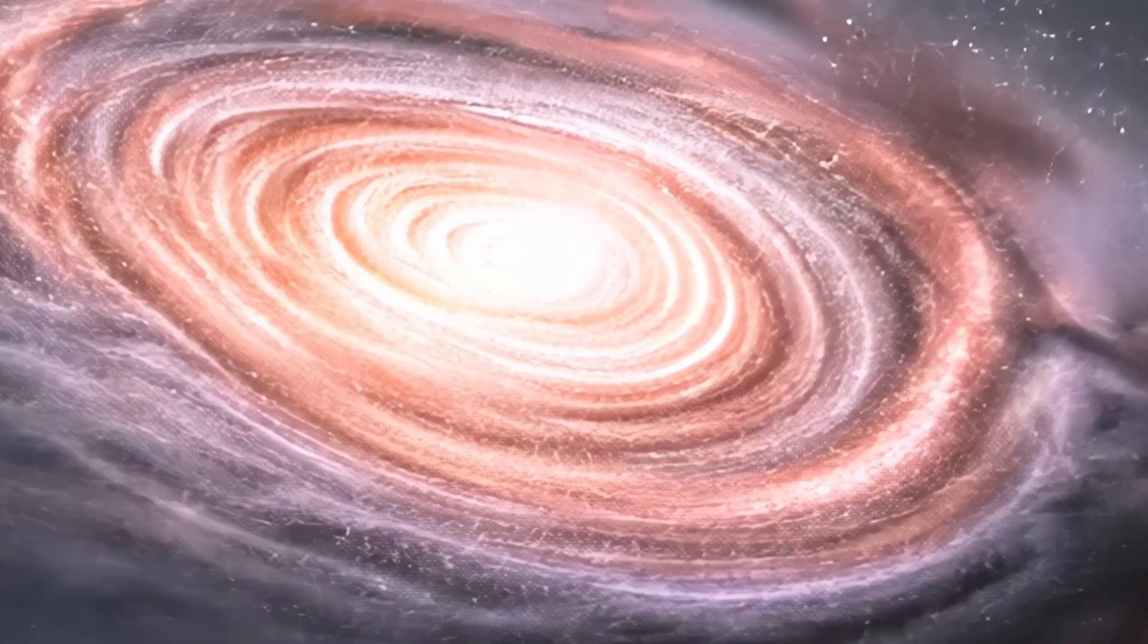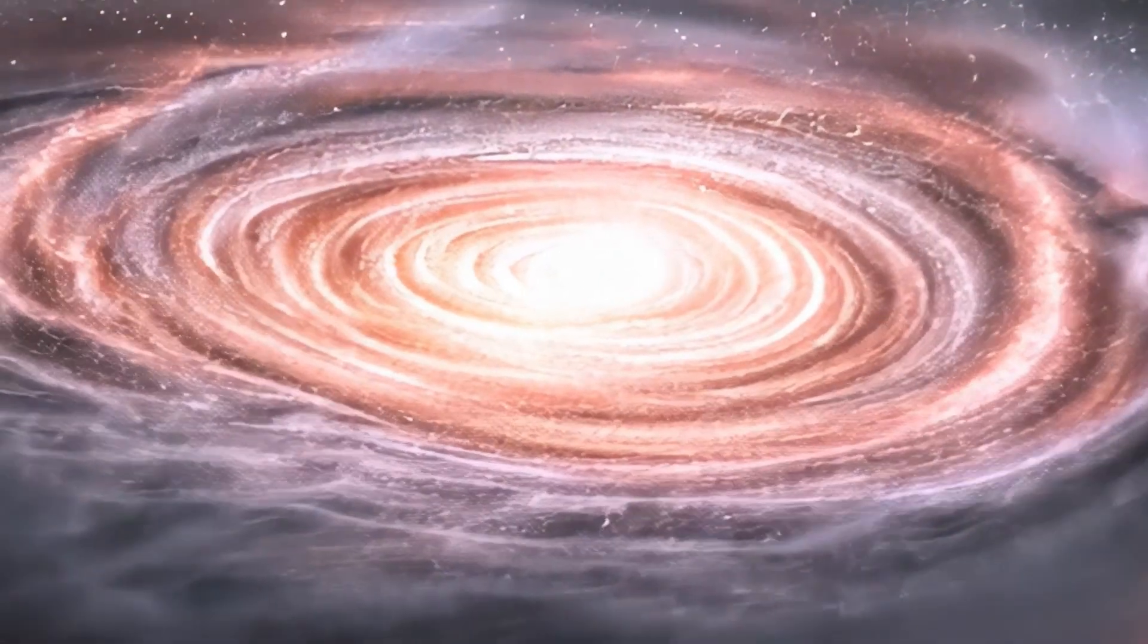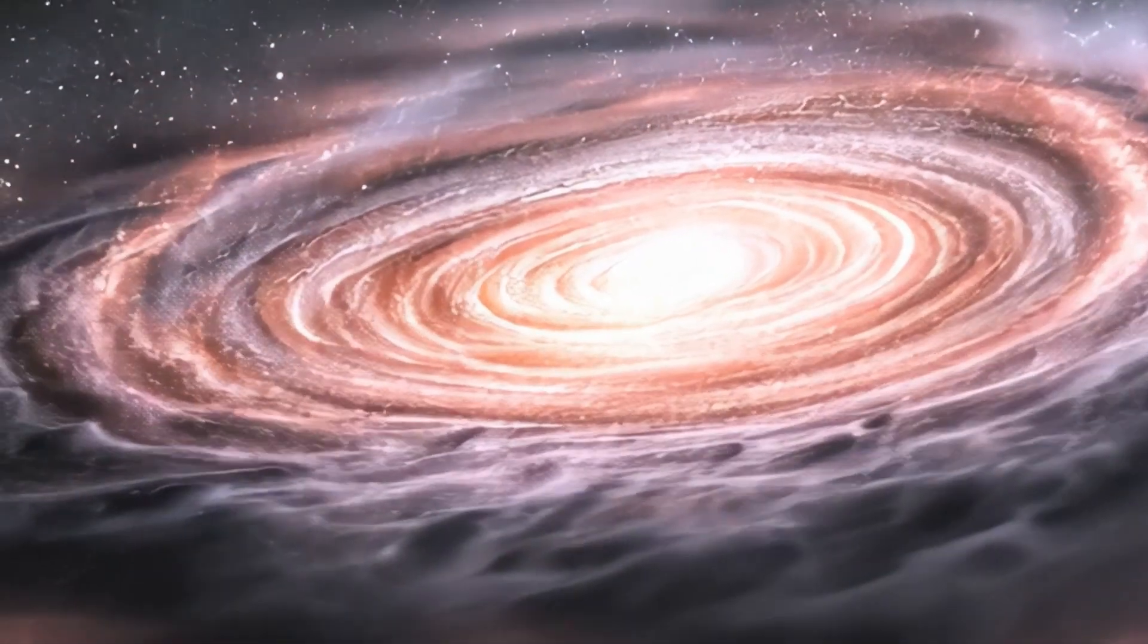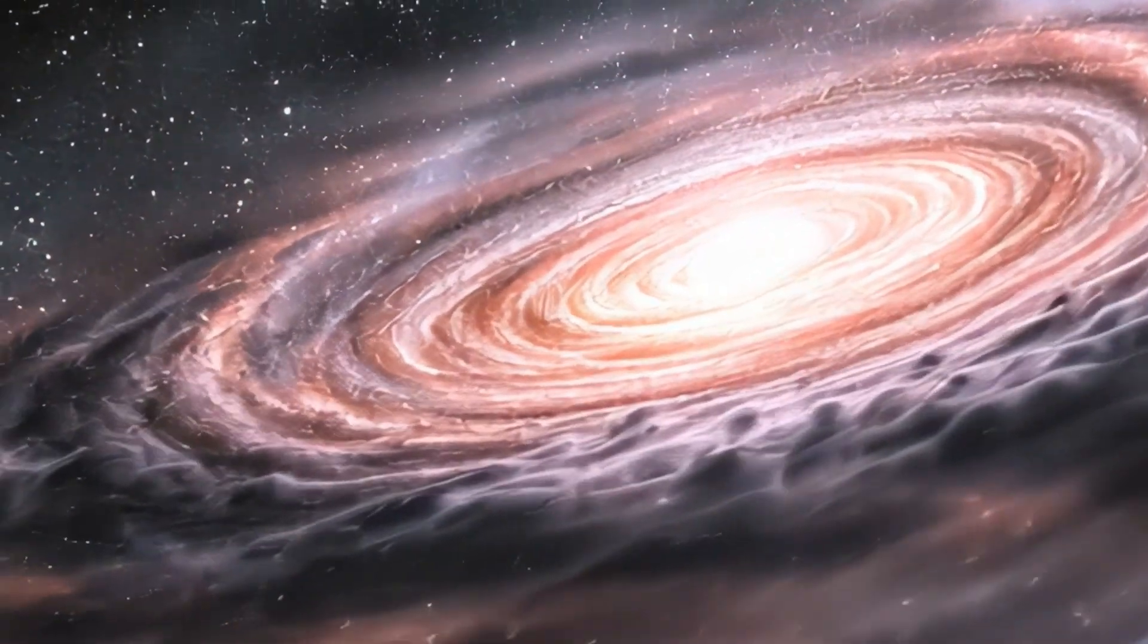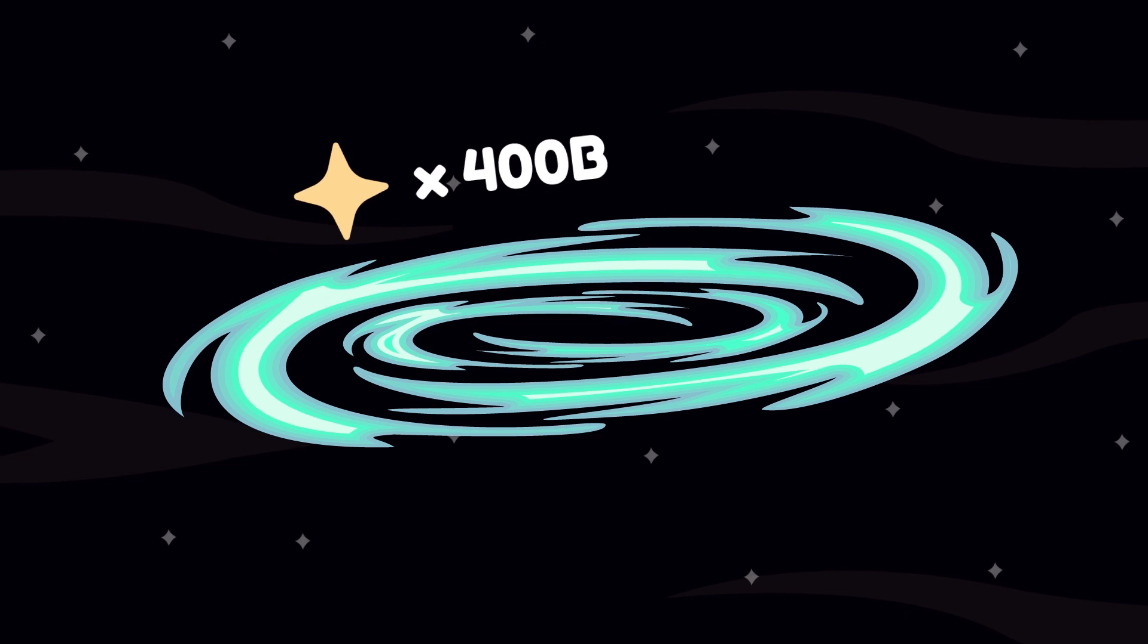Level 3. The Milky Way. Zoom out and suddenly you're seeing everything. A spiral disk of light. Elegant, ancient, and absolutely enormous. 400 billion stars.